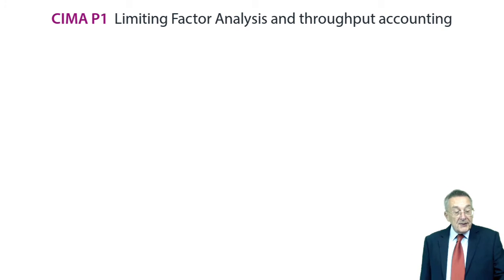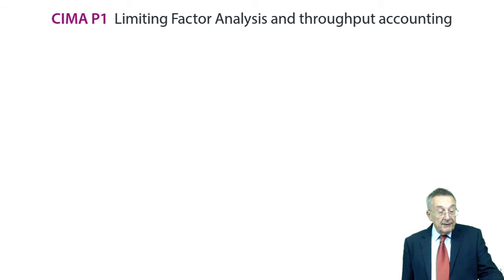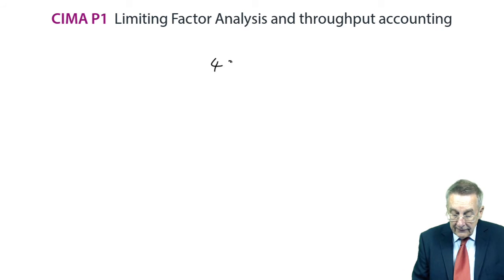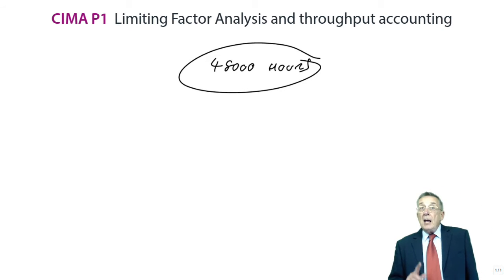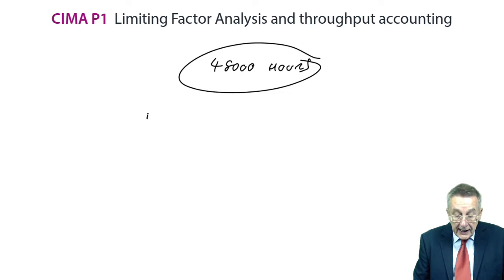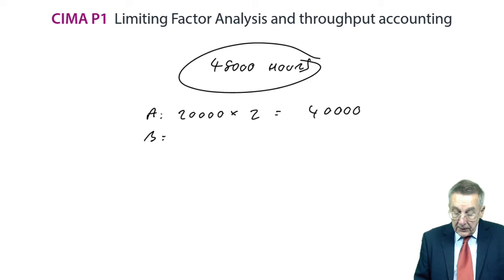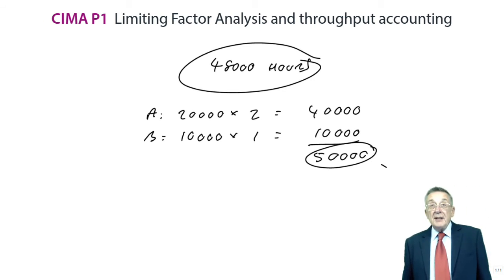The reason it's not quite so obvious is the line I've jumped over. It says the total hours, and actually it should say, and it will say in your exam, the total machine hours available are 48,000. So for some reason, we can't use more than 48,000 hours. And the problem is, if we did produce to meet demand, if we produce 20,000 of A, each unit would need two hours, a total of 40,000. If we produce 10,000 units of B, each takes an hour, another 10,000.